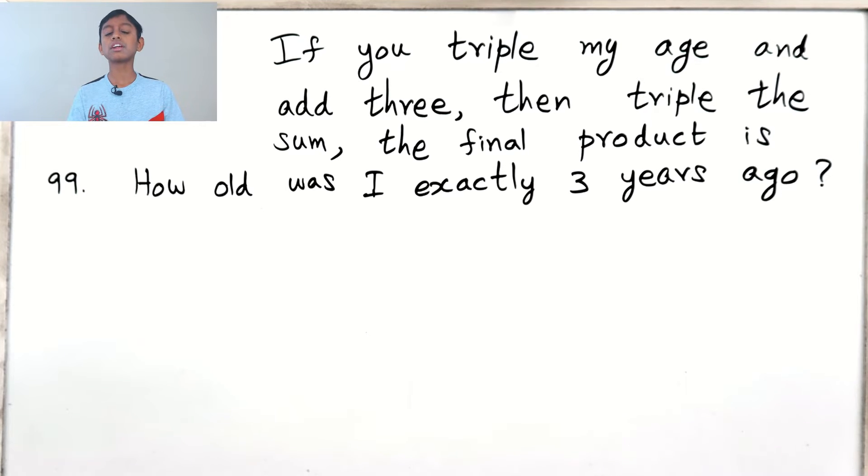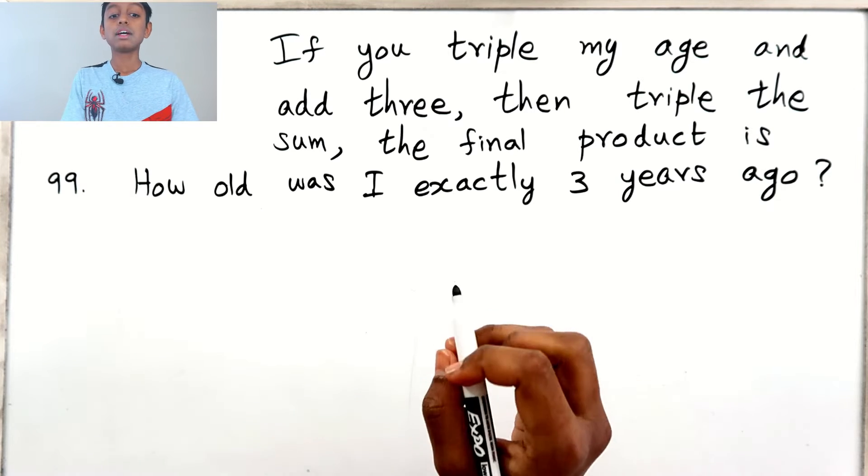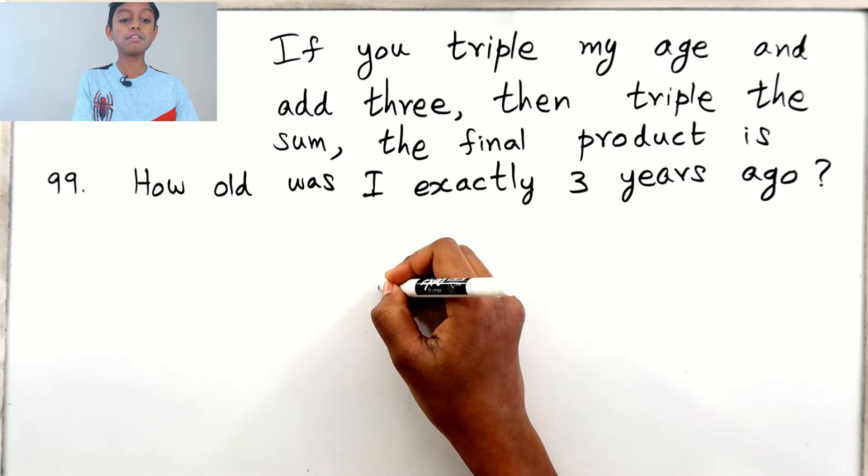So we need to find this person's age, and we need to find their age three years ago. First, let's write an expression. We don't know this age, so let's put a variable in its place.